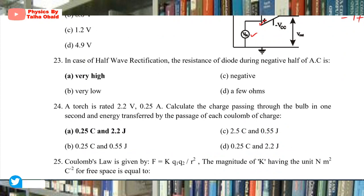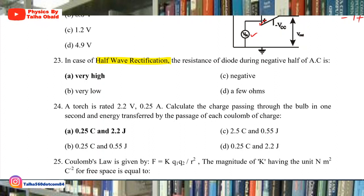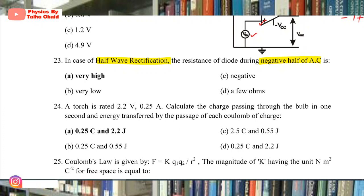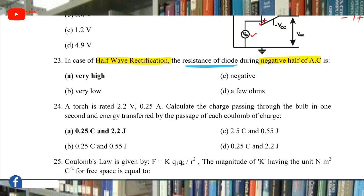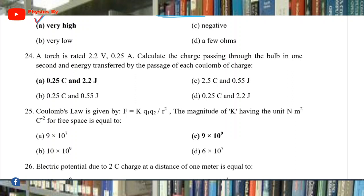Question 23: In half-wave rectification, the resistance of the diode during the negative half of AC — during positive half, the diode is forward biased and conducts. During negative half, the diode is reverse biased, does not conduct, and its resistance is very high.